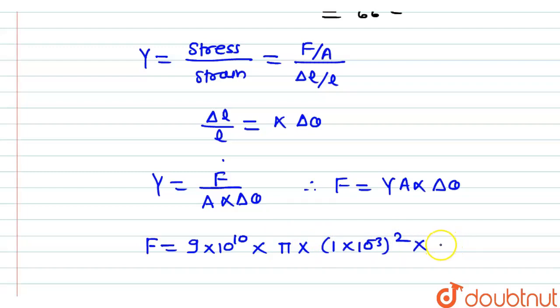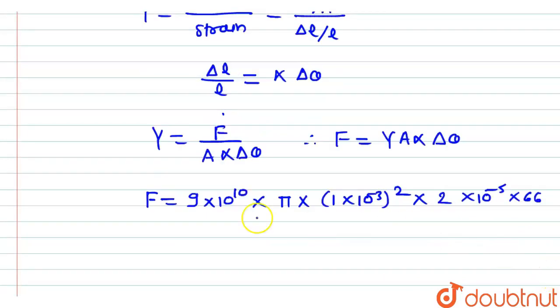Pi into R square is 1 into 10 raise to the power minus 3 bracket square, into the value of alpha, that is 2 into 10 raise to the power minus 5, into del theta, the value of del theta is 66. On solving this, we get F equals 3.7 into 10 raise to the power 2 Newton, and this force is nothing but tension developed in the wire. T equals 3.7 into 10 raise to the power 2 Newton.